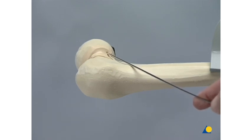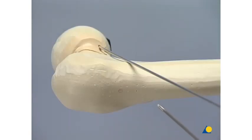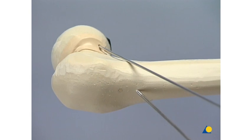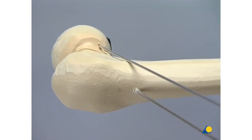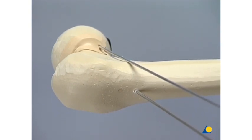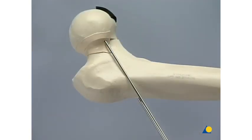The first 2.8 millimeter guide wire is introduced parallel to the orientation wire and its position is checked under fluoroscopy. If the first wire in the head and neck is correctly positioned, the orientation wire may be removed.